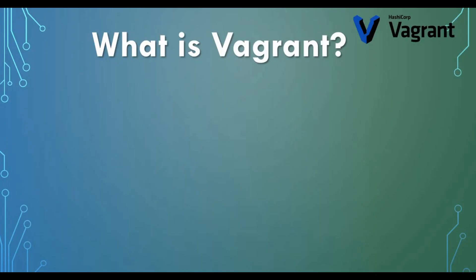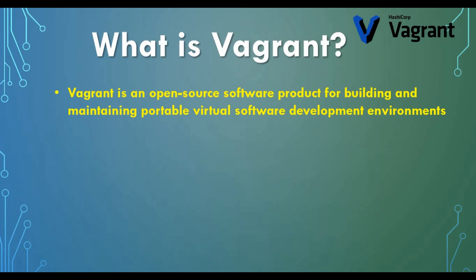So what is Vagrant? Vagrant is an open source software product for building and maintaining portable virtual software development environments. Similar to infrastructure as code, where all your configuration for your infrastructure is stored as a YAML or config file, you write down your requirements and run the code to deploy your infrastructure in a cloud environment or Docker, managing everything in Git for versioning.